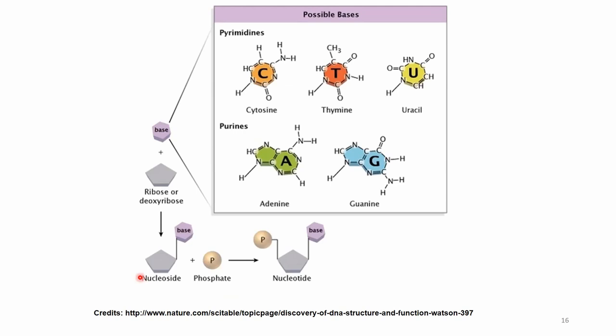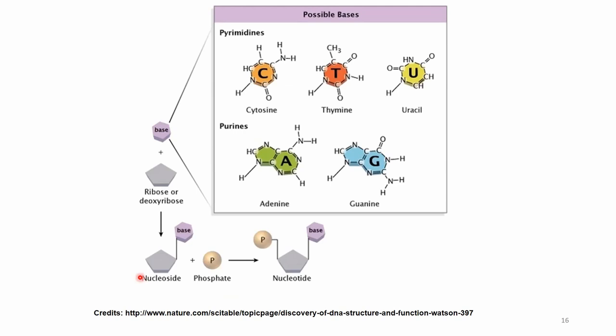This is a visualization of the nucleotides so you know what to look for: there is the base, the deoxyribose, and the phosphate forming the nucleotide. The bases could be any of the four. There is also a fifth — uracil — which is not in DNA but replaces thymine in RNA. Throughout this course, we will deal exclusively with DNA, so we will see only these four.